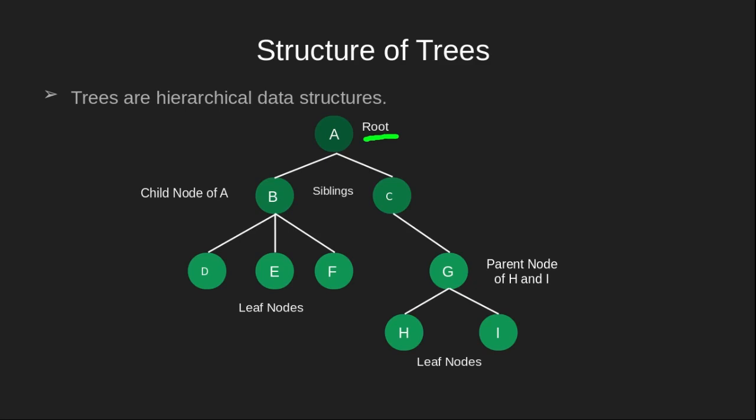If two nodes have the same parent, like B and C which both have A as their parent, they are known as siblings. H and I are also siblings since they share parent G. Another example of siblings is D, E, and F — all three nodes have B as their parent. Leaf nodes are nodes which do not have any children. In this example, D, E, F, H, and I are the five leaf nodes.